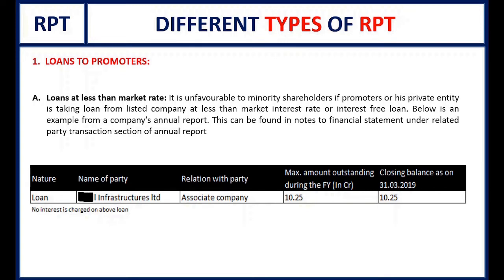What happens in this case? Suppose a promoter has a private company. If they need a loan from the market, they go to a bank or NBFC and get a loan at an average of 8 to 9% interest. But if the promoter is taking a loan from the listed company at less than market rate, that is not a sign of good corporate governance. It is not favorable to other shareholders because it is the listed company's money — and all shareholders, including promoters and minority shareholders, have rights over it.